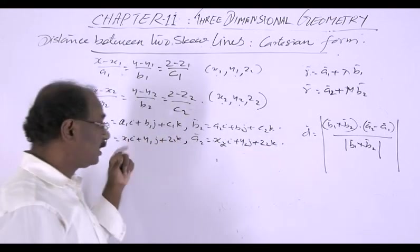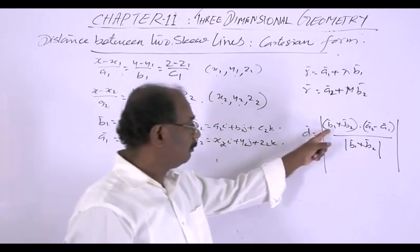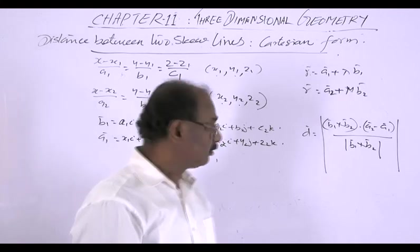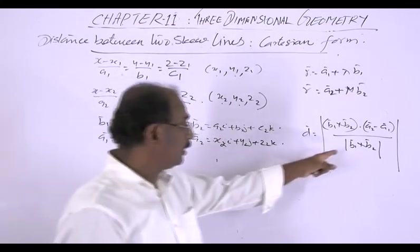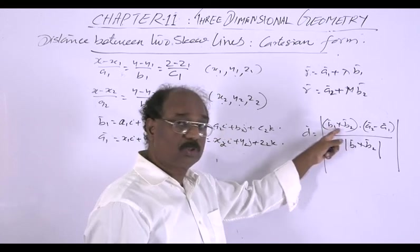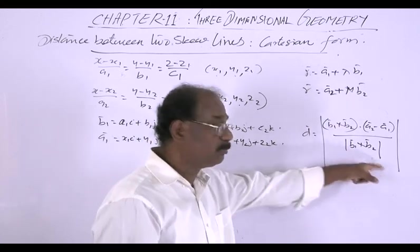So find a2 minus a1, v1 cross v2, then find a2 minus a1. Also find the modulus of v1 cross v2. After obtaining this v1 cross v2 we can have it similar to this.